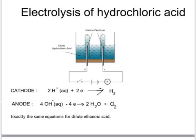However, we get exactly the same equations for dilute ethanoic acid because it's the H+ ions in the ethanoic acid and the OH- ions from the water which again get involved in electrolysis.